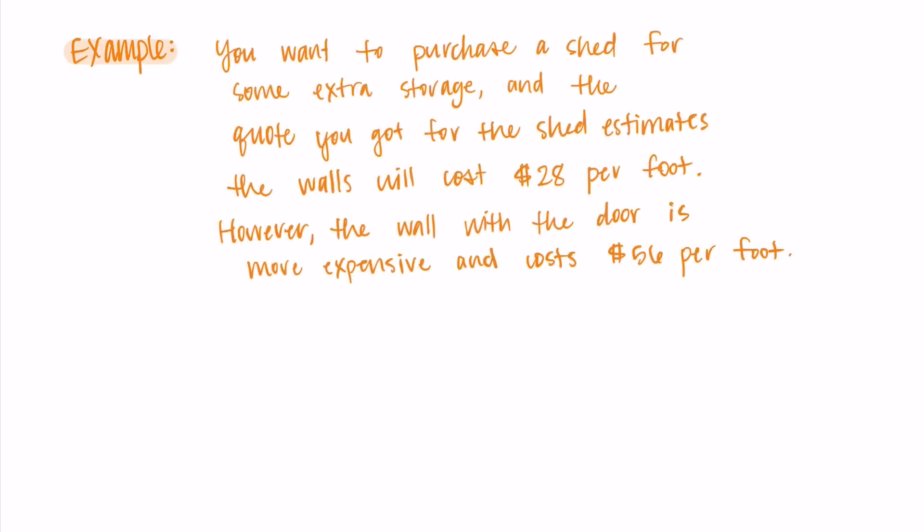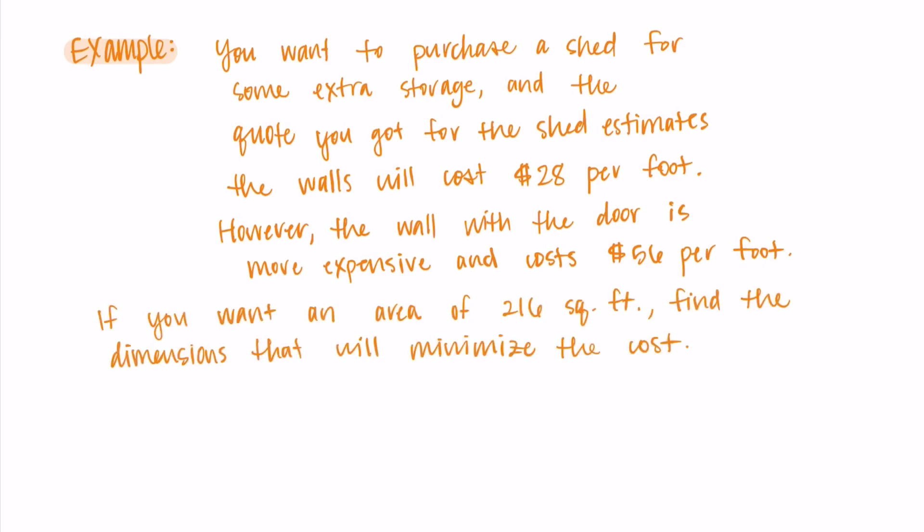For our next example, let's say you want to purchase a shed for some extra storage. And the quote you get for the shed estimates that the walls will cost $28 per foot. However, the wall with the door is more expensive, and so it costs $56 per foot. If you want your shed to have an area of 216 square feet, find the dimensions that will minimize the cost of the shed.